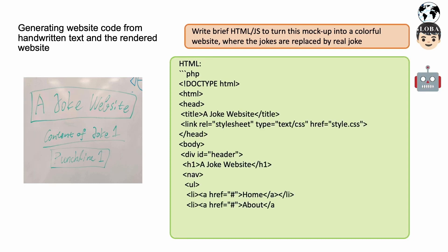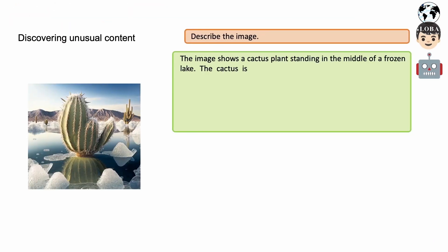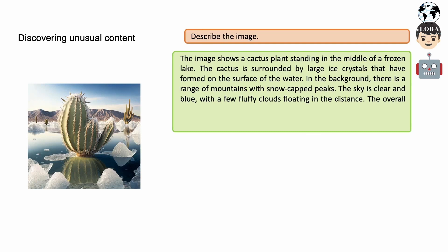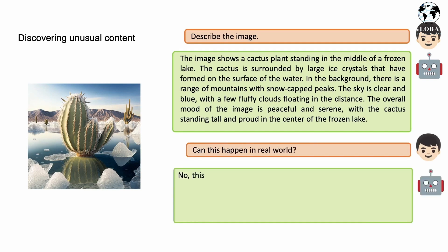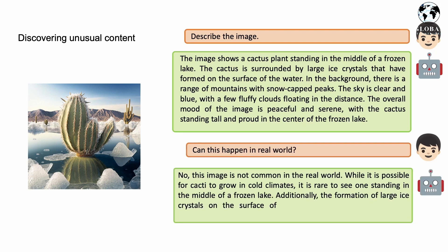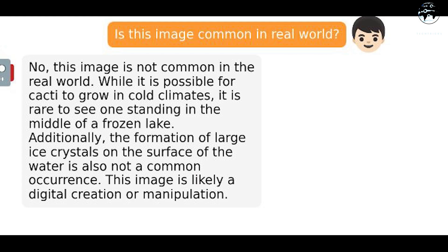Consider this example illustrating the power of Mini GPT-4. When asked to describe an image featuring a cactus plant standing in the middle of a frozen lake, the AI provided a precise description of the peculiar scene. Moreover, when inquired about the possibility of such an occurrence in the real world, Mini GPT-4 acknowledged that while cactus can grow in cold climates, it is an uncommon sight to witness one in the midst of a frozen lake.